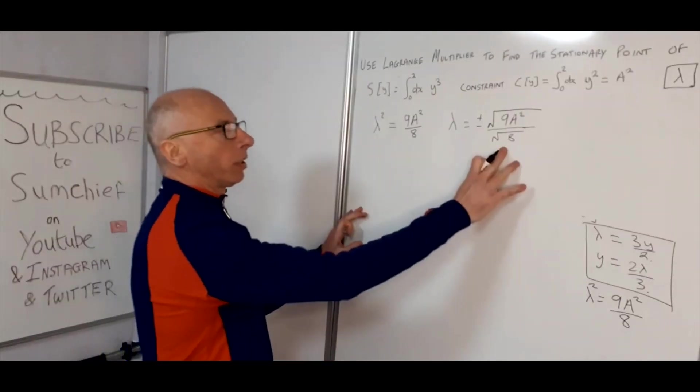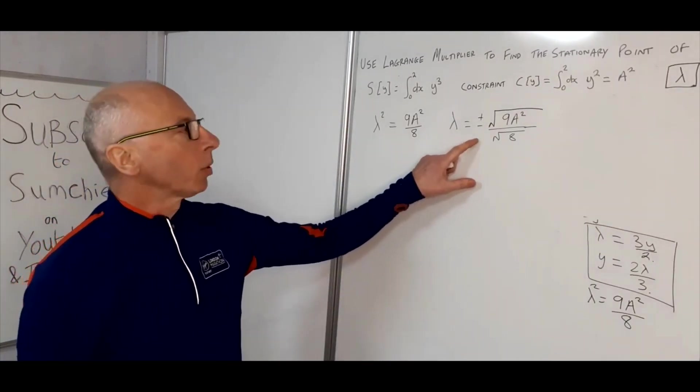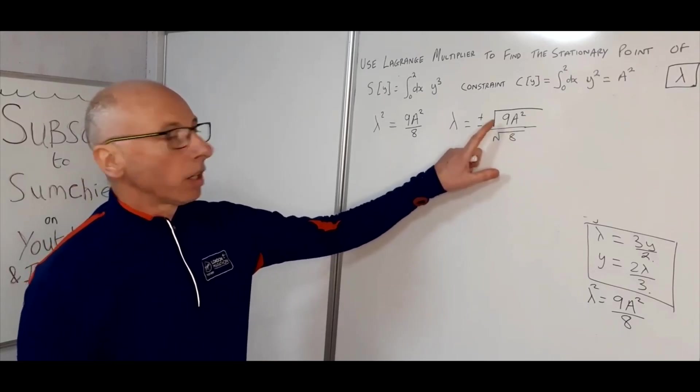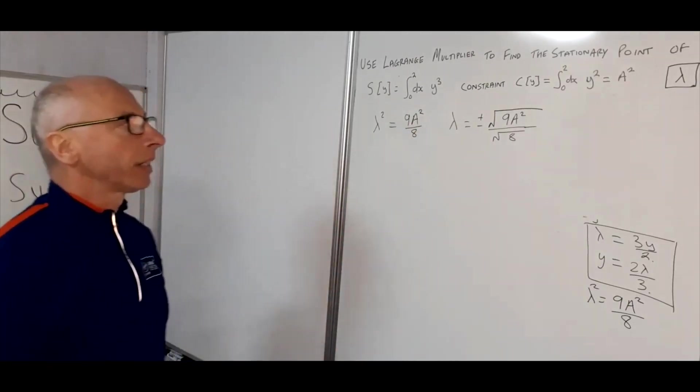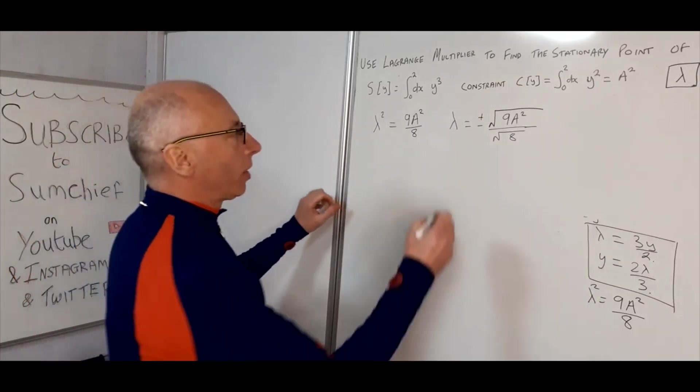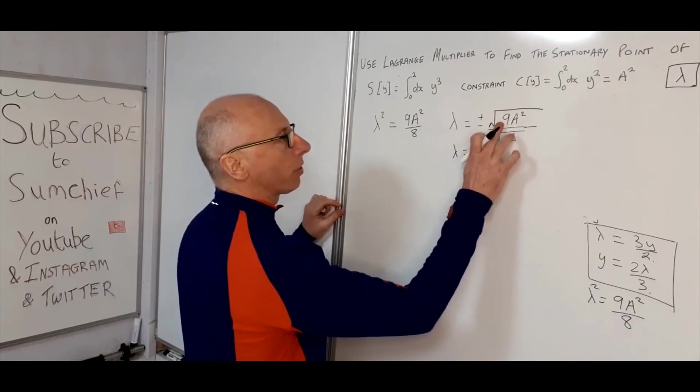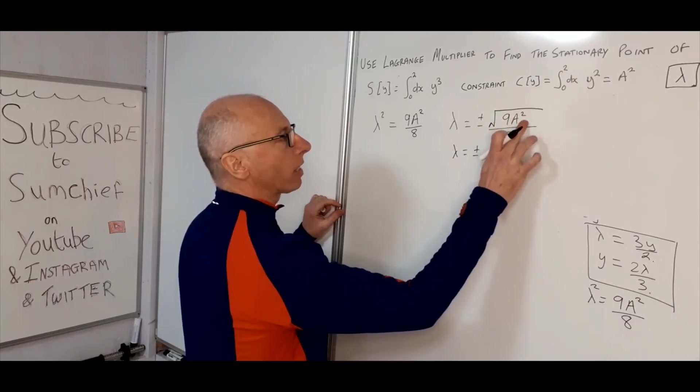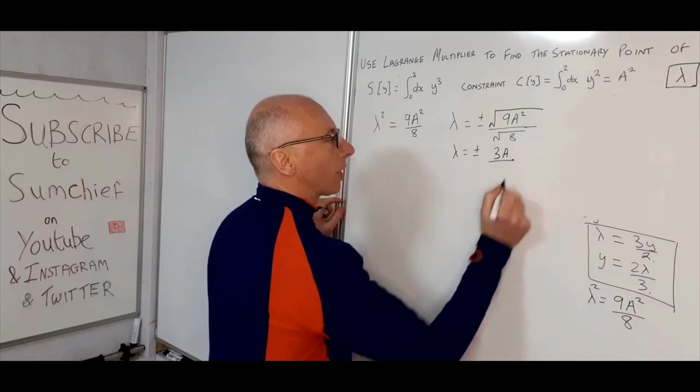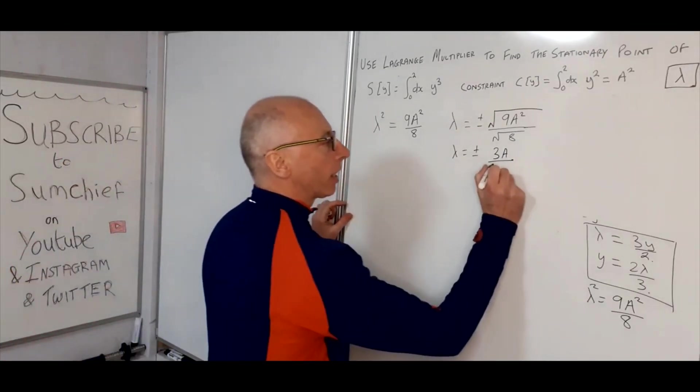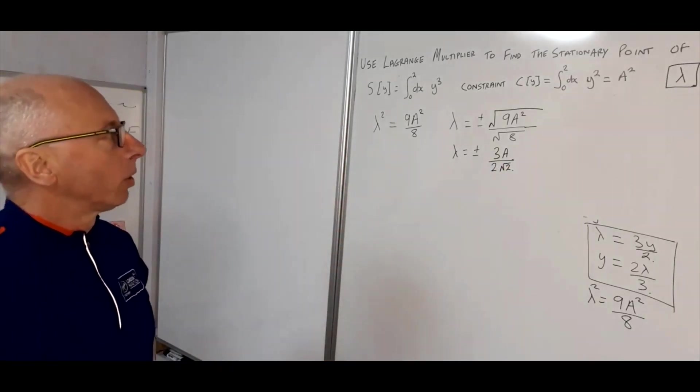So I've rewritten what we've got so far. Our lambda squared equals 9A squared over 8, and lambda equals plus or minus 9A squared square root over square root of 8. So obviously that's the square root of this side. So we can just simplify this side up a little bit. So lambda equals plus or minus, now square root of 9 is 3, and the square root of A squared is just A, so we could just write that one there as 3A. And square root of 8 is 2 root 2. So that makes our lambda look a little bit more simple.